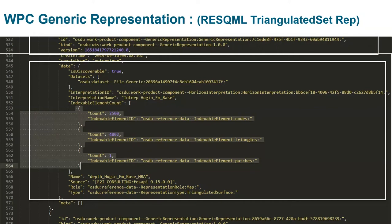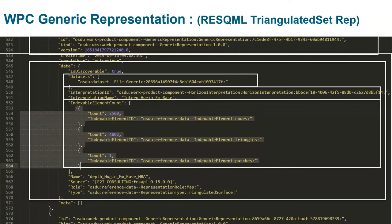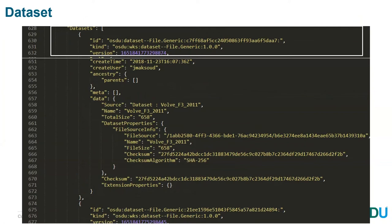The interpretation ID is the link from the representation to the interpretation. The index sub-element count holds the number of items in the system. For the data set, we use the generic data set system, and we have the link between the EPC container with HDF5 or the link to the XML file containing the metadata in the ResQML file. This is ready to be delivered.